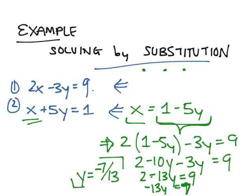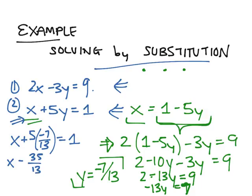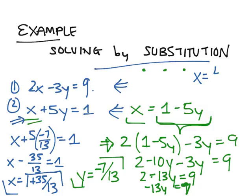And if we plug that in, it'll be easier to plug it into our second equation. So we've got x plus 5 times (negative 7 over 13) is equal to 1. Then x minus 35 over 13 is equal to 1, so x is equal to 1 plus 35 over 13. If you multiply that out, you get x is equal to 48 over 13. So that gives you x and y are equal to 48 over 13, negative 7 over 13.